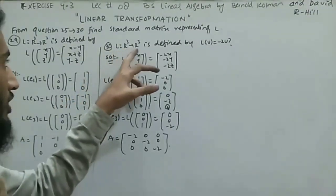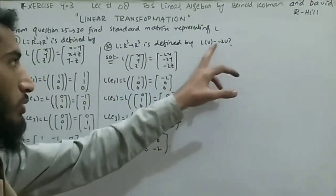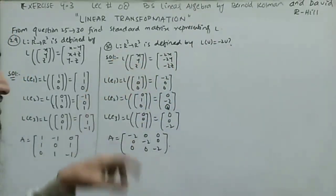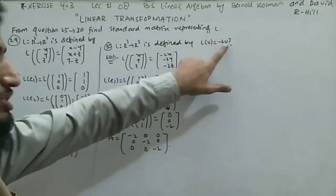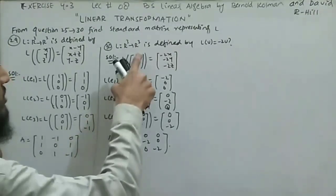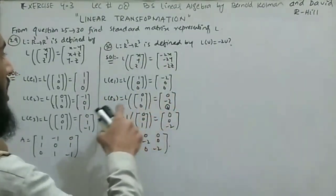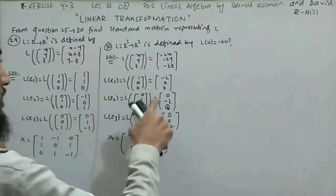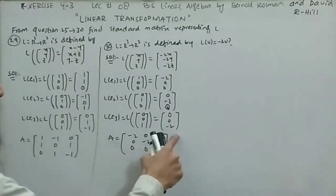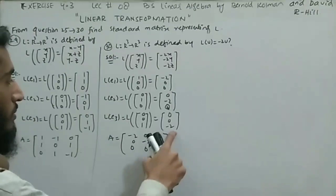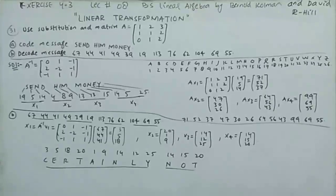Question 30: L is a linear transformation from R³ to R³ defined by L(u) = -2u. So L(x,y,z) = (-2x, -2y, -2z). Evaluating at e₁, e₂, e₃ gives columns (-2,0,0), (0,-2,0), (0,0,-2) respectively. The standard matrix is A = [-2,0,0; 0,-2,0; 0,0,-2], which is -2 times the identity matrix.